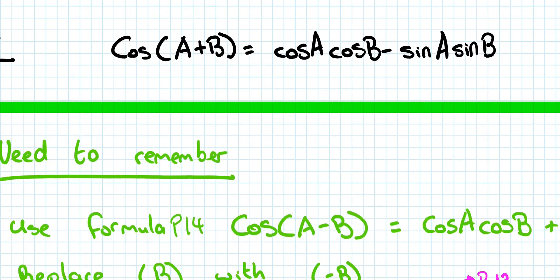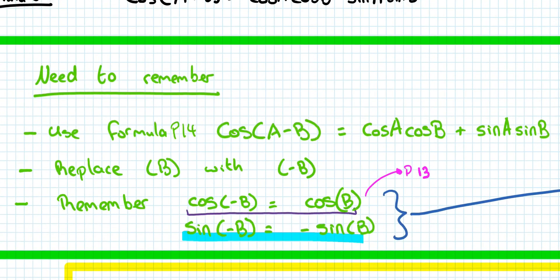So as usual we're going to start off with our green box and the key points that you need to remember. So again you might want to pause the video and write this down. So things that you need to remember: you're going to use the formula on page 14, cos(A-B) is equal to cosA·cosB plus sinA·sinB.